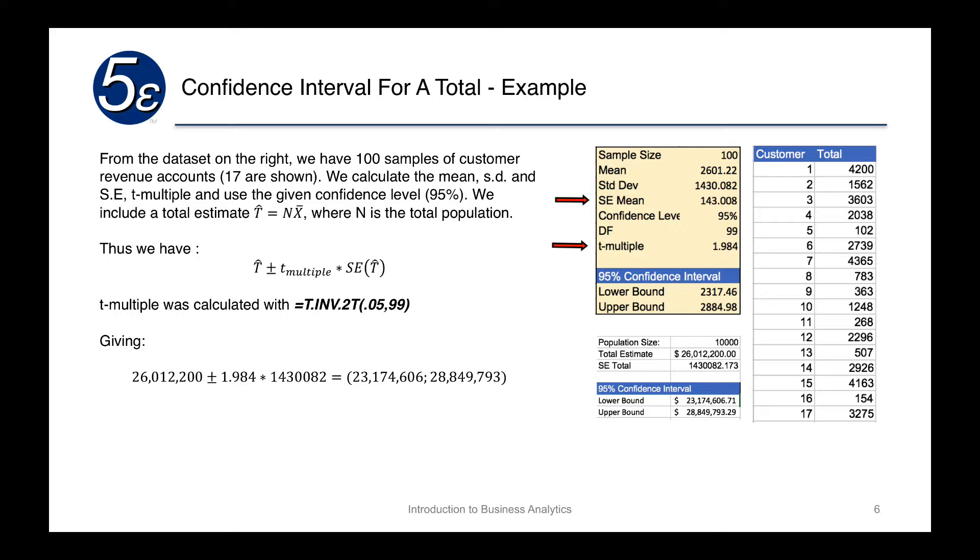And we include a total estimate, which is our T hat for the total estimate, which is equal to the total number of observations times our average sample, where N is the total population.